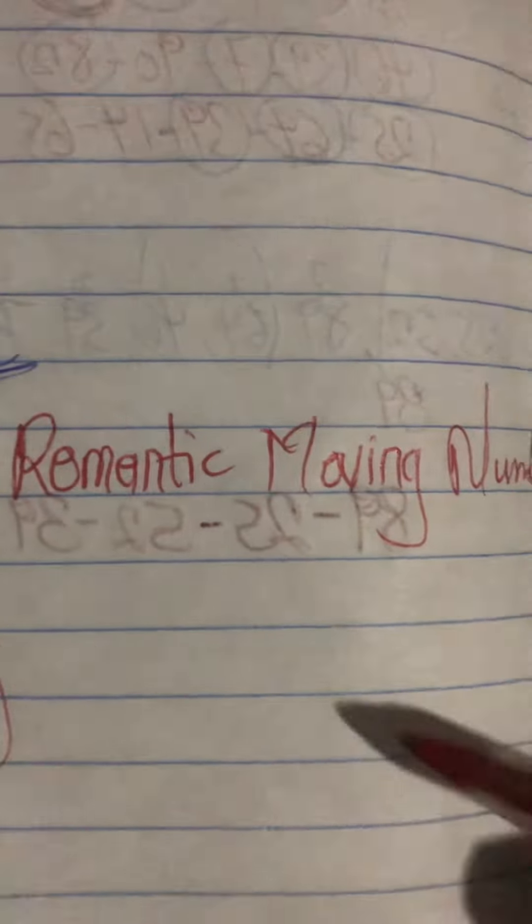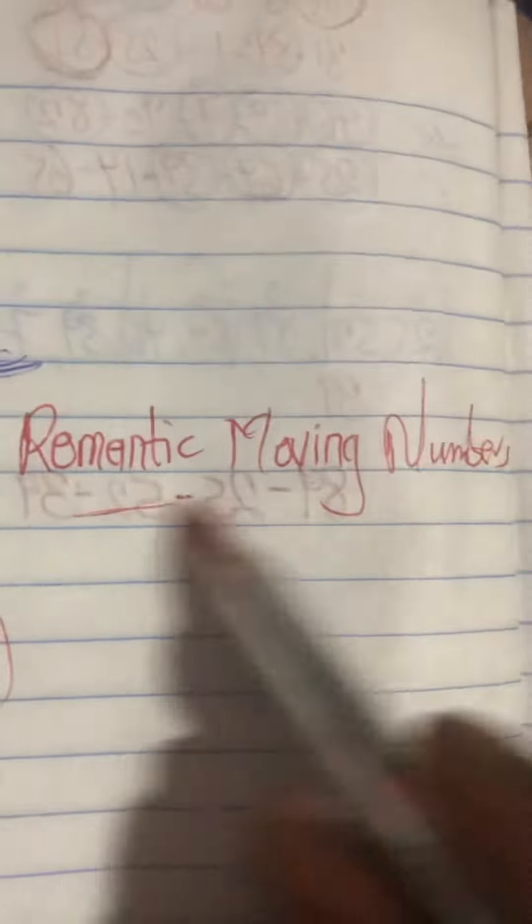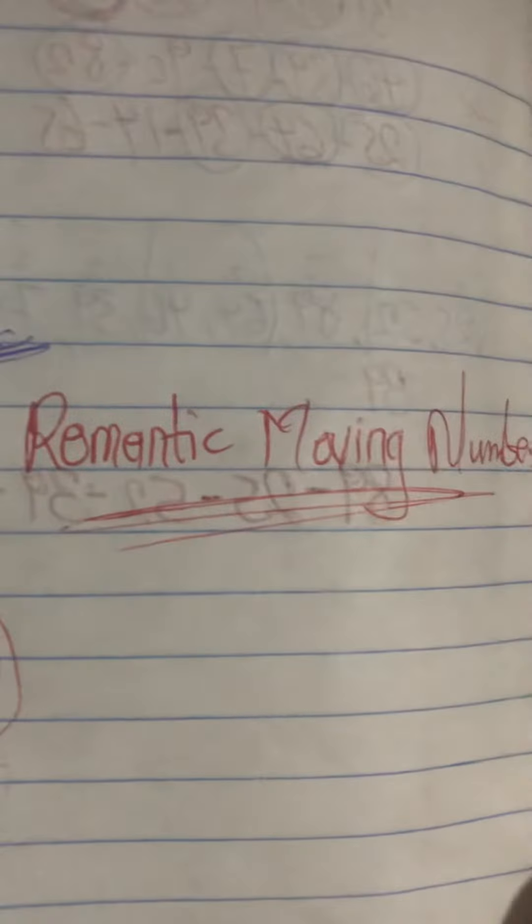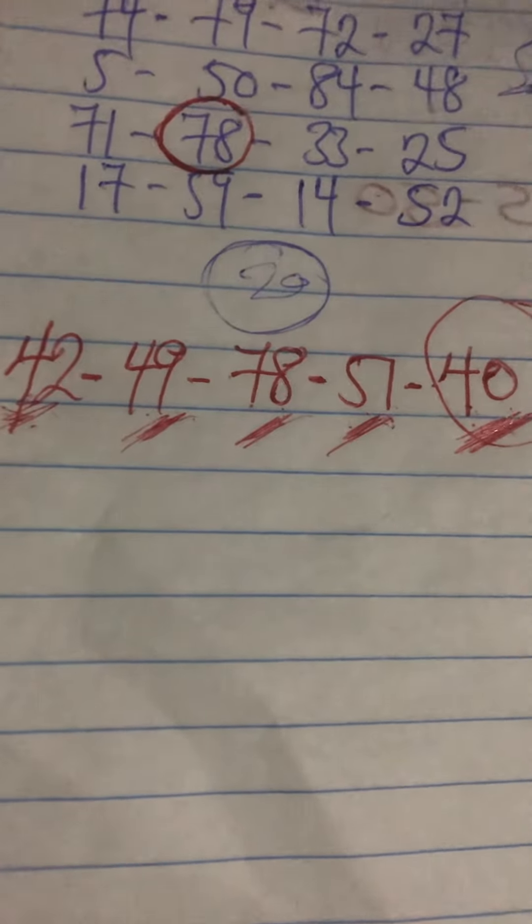In case you are not there, Romantic Movie Numbers on YouTube, go there and subscribe, okay. And for the moving numbers as well, which is 14. Let's see how it will be for 14. Thank you, good luck.